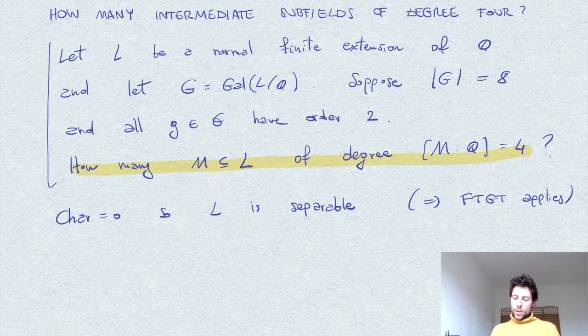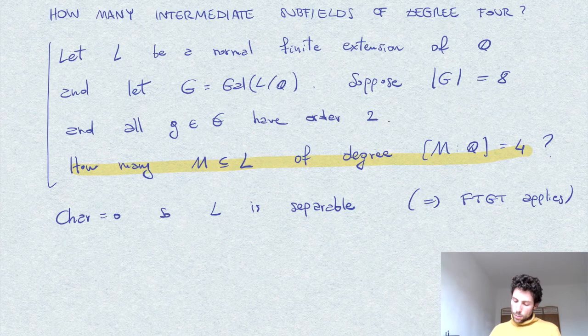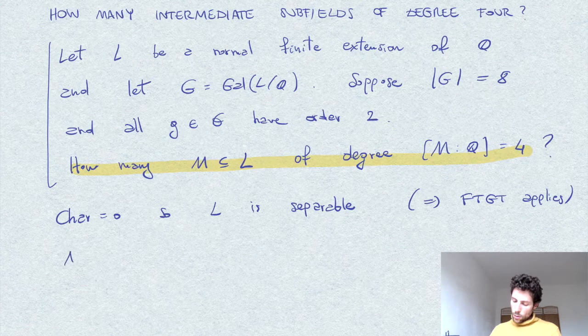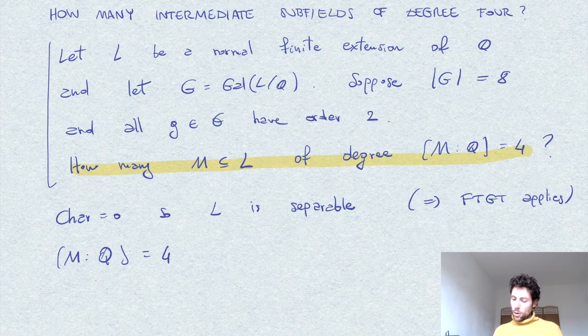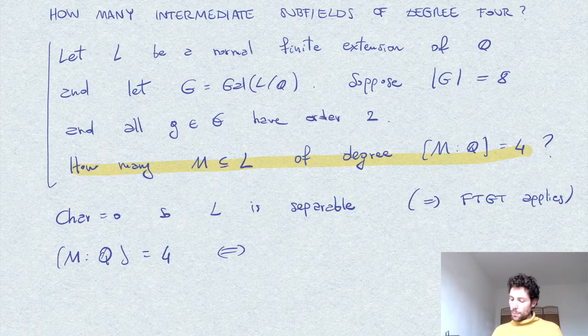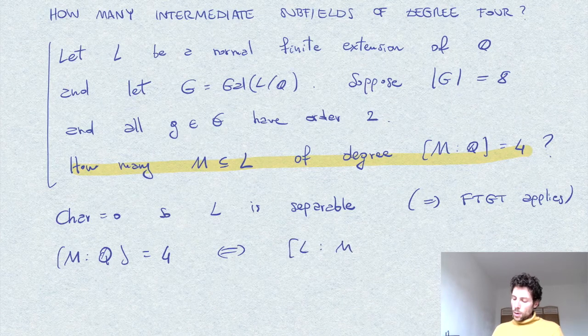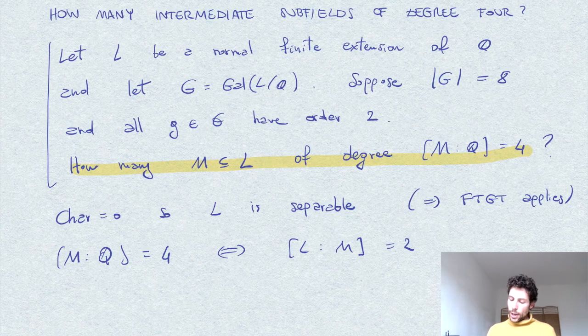Given M of degree 4 over Q, by the degree theorem this means that L over M has degree 2, since the Galois group has order 8.